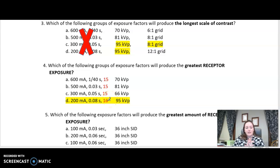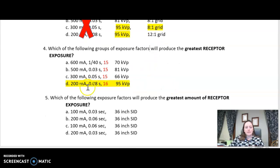It also is the highest KVP. KVP does have an effect on receptor exposure, not as great as MAS, but it does have an effect. So higher KVP will also increase my receptor exposure. It goes back to the 15% rule, but we won't travel there yet. So that's the answer for that one.